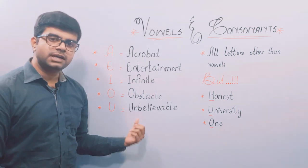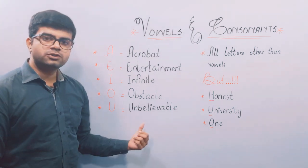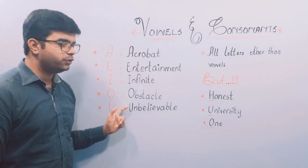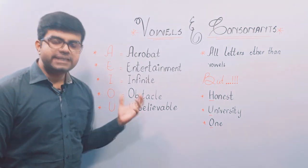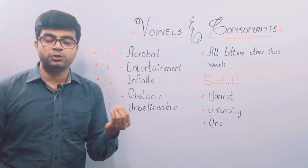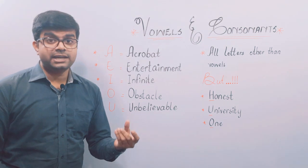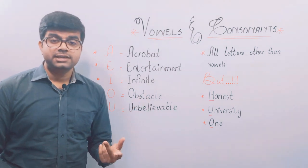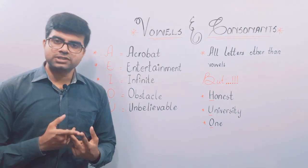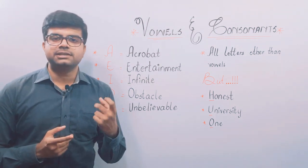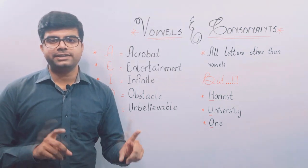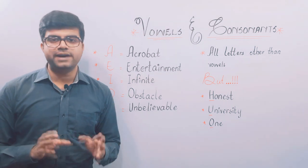The last vowel example is 'unbelievable', which means something strange — the first letter is U, which is also a vowel. So these are the five vowels: A, E, I, O, U. Then there is Y, which is a semi-vowel, meaning it has two different sounds — one consonant sound and one vowel sound — so it falls in both categories.